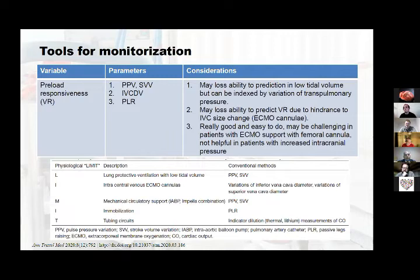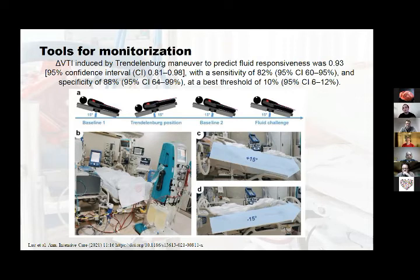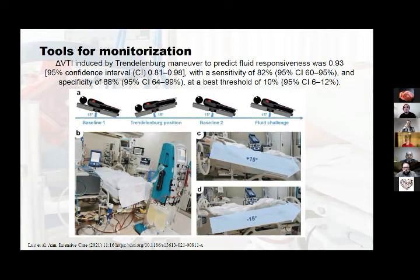The temperature changes from the ECMO flow also reduce the possibility of measuring cardiac output using thermodilution monitors. So how do we assess volume responsiveness with all these challenges? A recently published article demonstrates that we can perform a modified passive leg raise by positioning the patient's bed in anti-Trendelenburg at +15 degrees, then in the opposite direction at −15 degrees, and measuring the cardiac output variability by ultrasound to assess volume responsiveness in these patients.